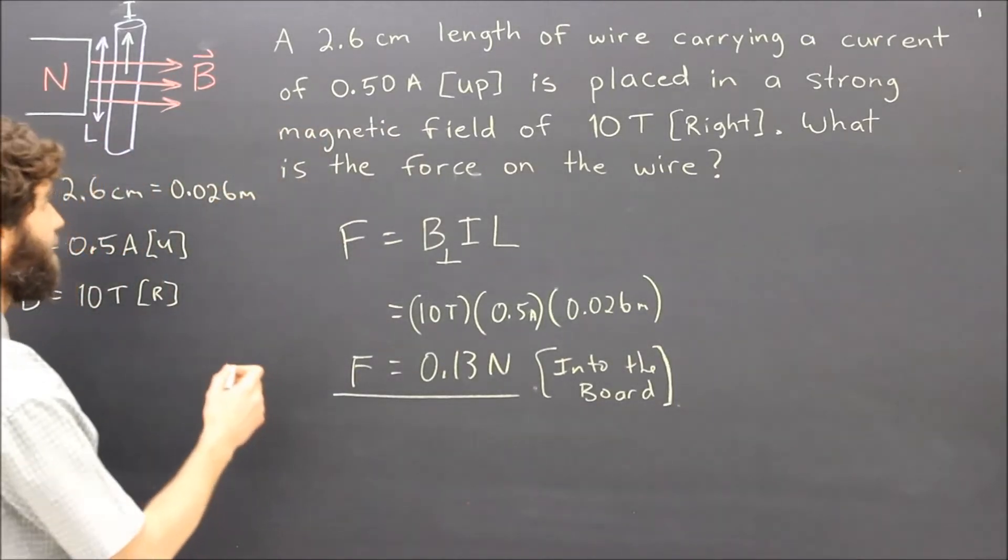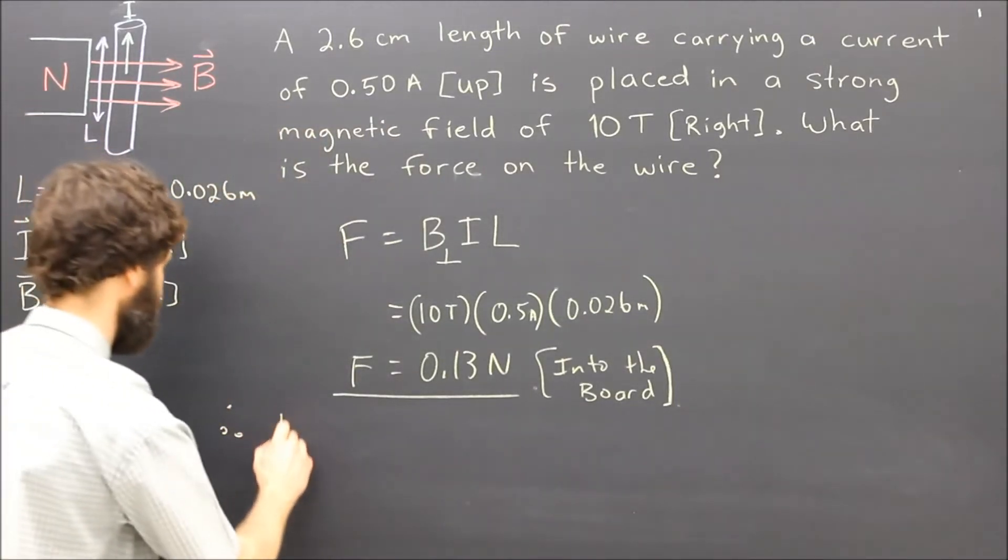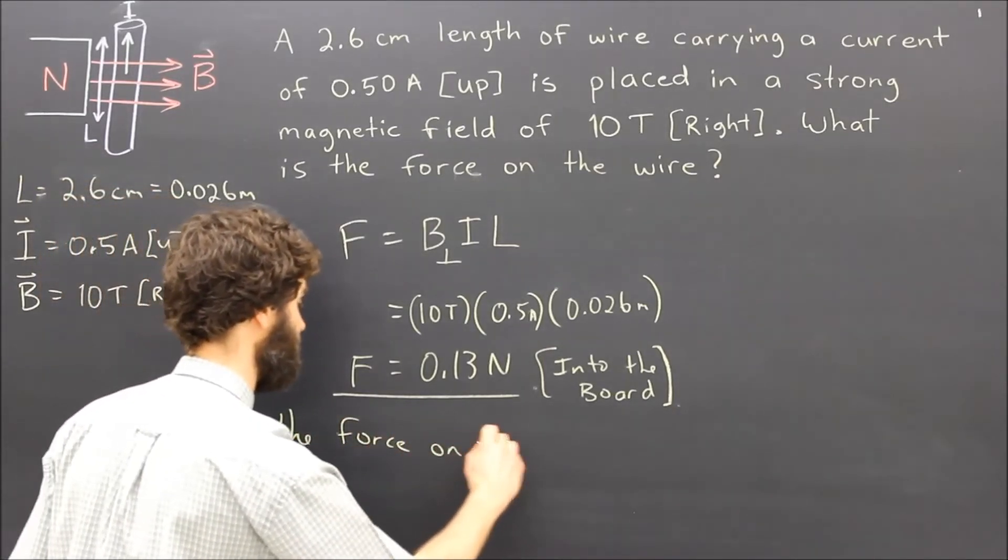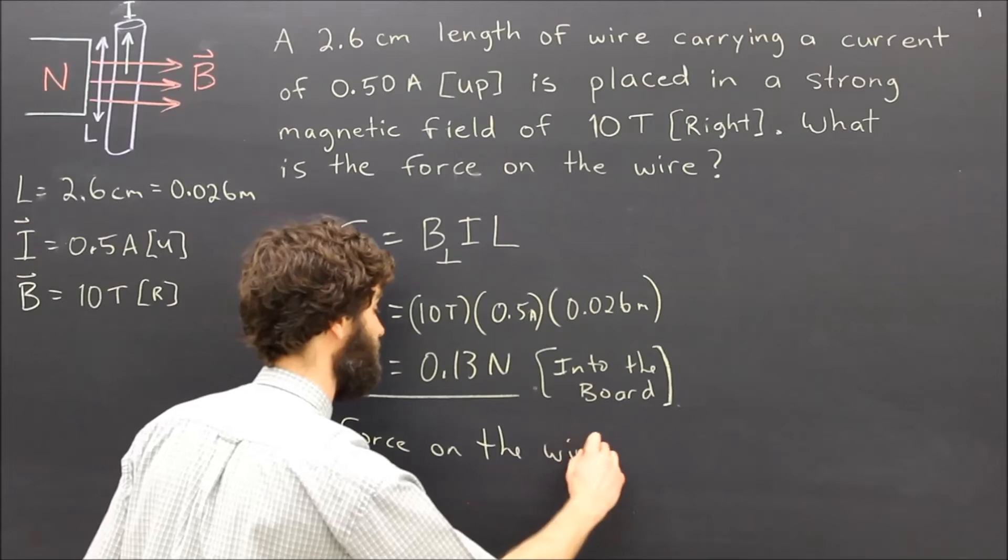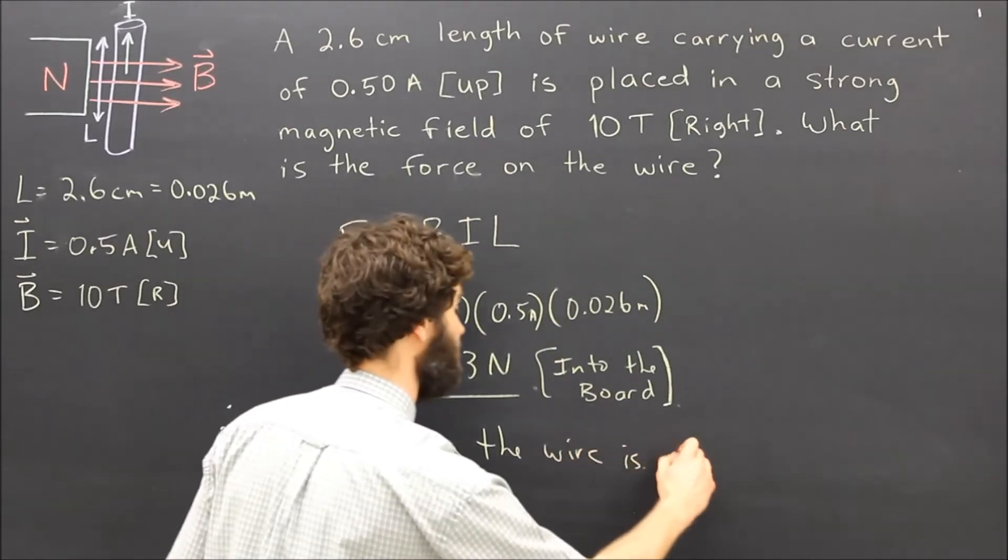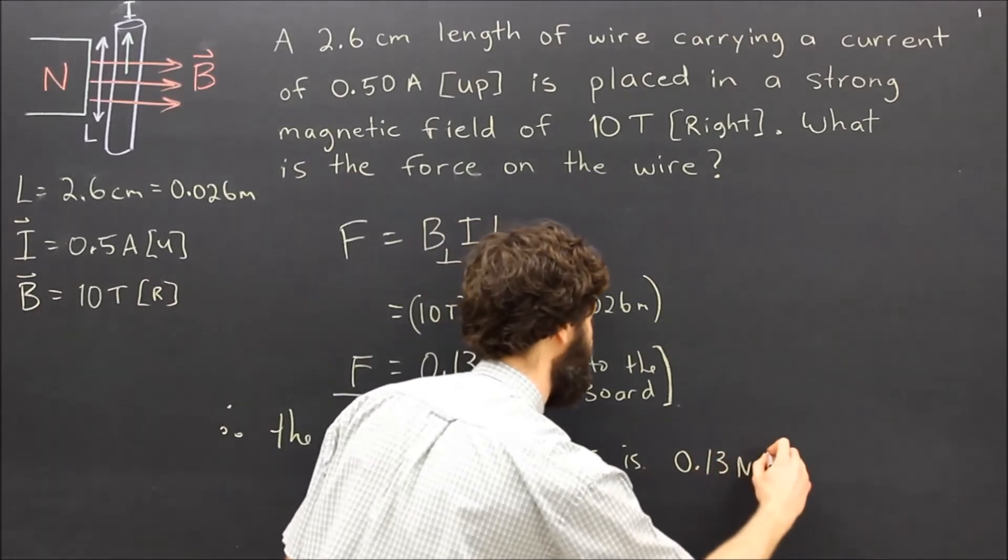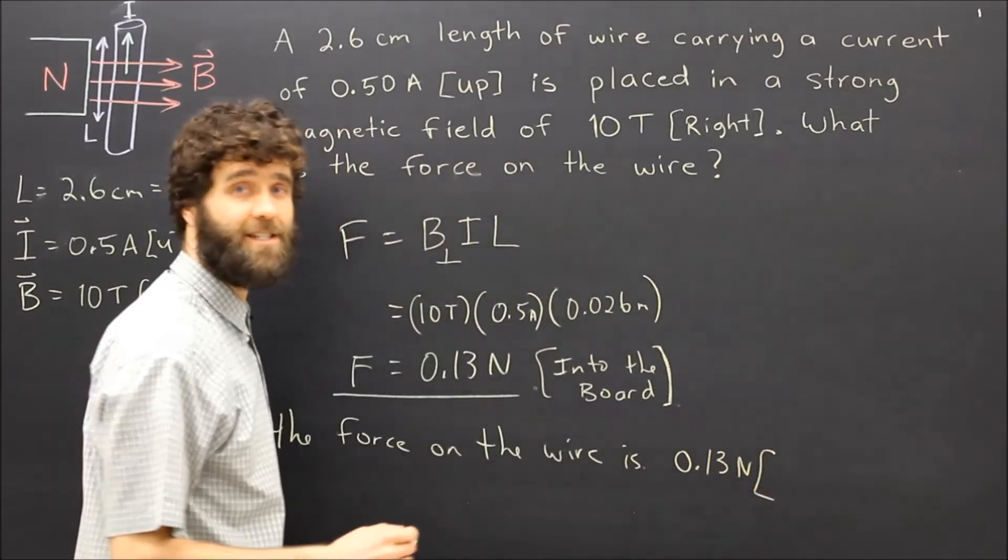So therefore, the force on the wire is 0.13 newtons and the direction is into the board.